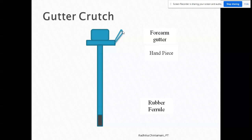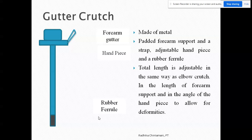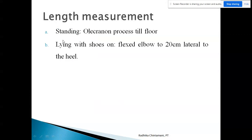The last type of crutch is the gutter crutch. It has a forearm gutter where the forearm is placed, a handpiece, and a rubber ferrule. It is generally made of metal. The development order was: axillary crutch first, then elbow crutch, then gutter crutch. Its parts include padded forearm support, a strap, an adjustable handpiece, and a rubber ferrule. The total length is adjustable similar to the elbow crutch. The angle of the handpiece is also adjustable to allow for deformity.